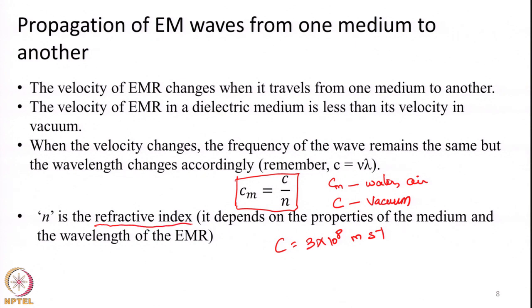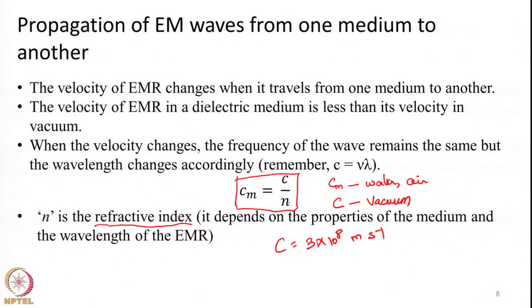The refractive index can be thought of as how much the medium will bend the light ray when traveling through it. Based on the refractive index of the medium, the velocity will change correspondingly — if the refractive index of the medium is higher than that of vacuum, the velocity in the medium will go down. For example, the refractive index of air is roughly about 1.003, for water it is around 1.1 to 1.2, and the refractive index of vacuum is 1. Substituting into the equation, we can observe that the velocity of EMR traveling through water or air is less than the velocity of EMR in vacuum.